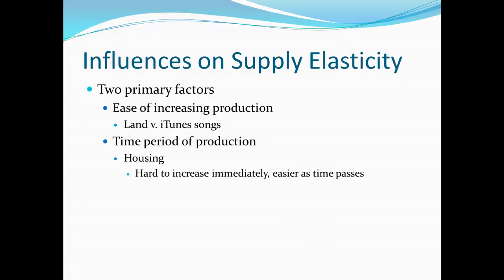Allow even more time to pass, and then we have time to get through a growing season. We can go ahead and plant and harvest more green beans, can them, and get those to market as well — allowing for even more elastic supply. That is, suppliers are even more responsive to price changes over the very long term. So, it's really just these two factors: how easy is it to increase production, and what's the time period of production like? Are we looking at a very short term or the immediate term, or are we looking at a more long-term effect?